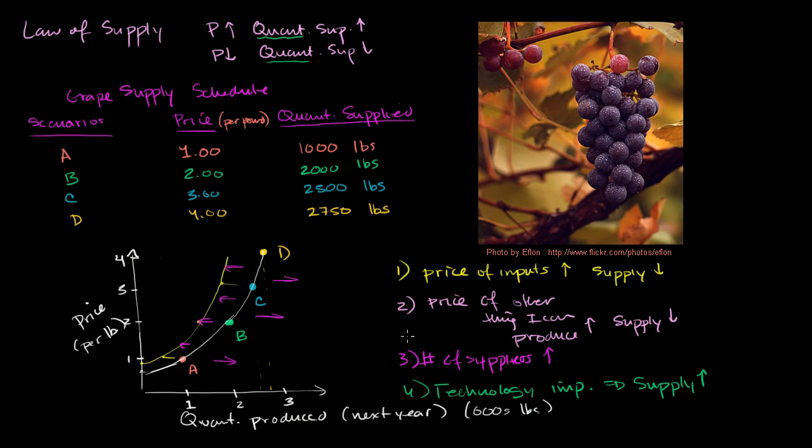You can also think of it as it might make it cheaper to produce, so it's kind of the same thing. The price of inputs might go down, which would make your supply go up. Or you could just say there's going to be more grapes popping off these new types of vines, so we're going to produce more grapes.